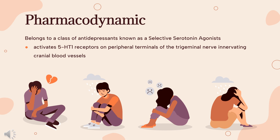In addition to causing vasoconstriction, experimental data from animal studies show that Narotriptin also activates 5-HT1 receptors on peripheral terminals of the trigeminal nerve innervating meningeal blood vessels, which may also contribute to the anti-migrainous effect of Narotriptin in humans.